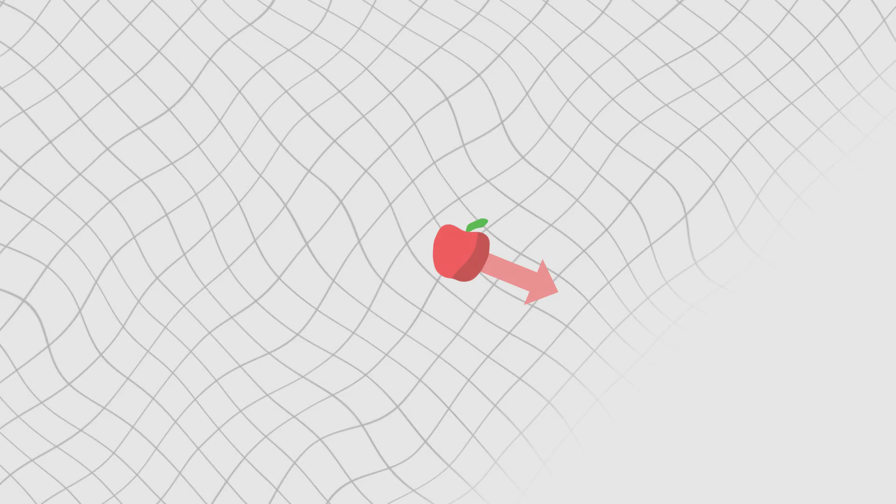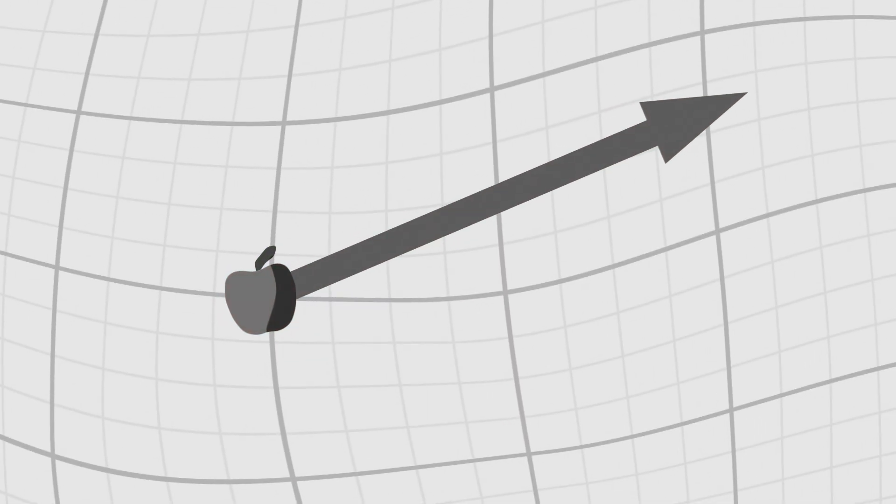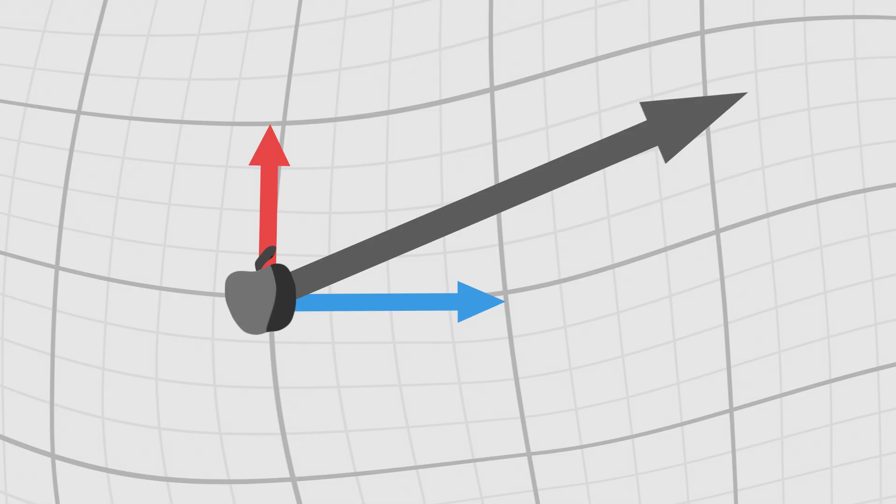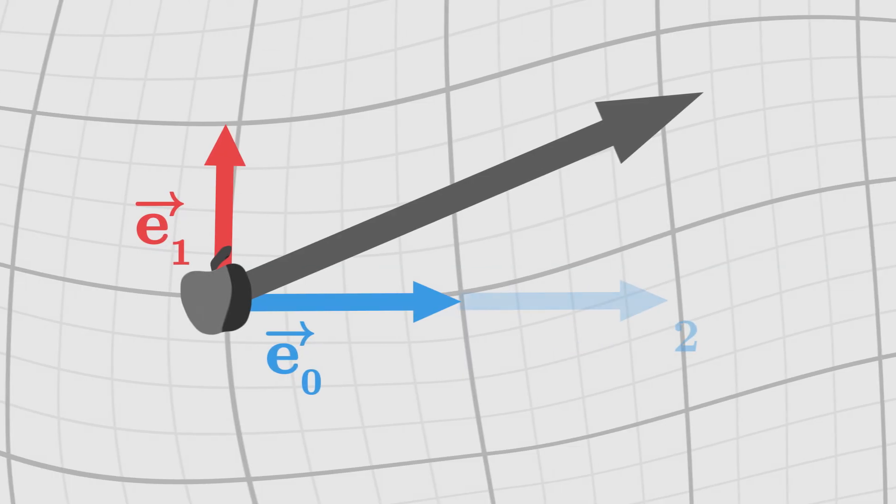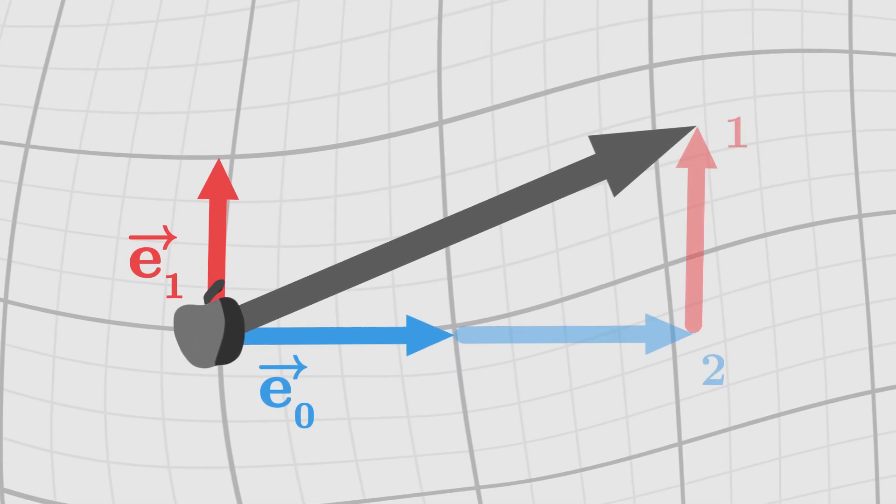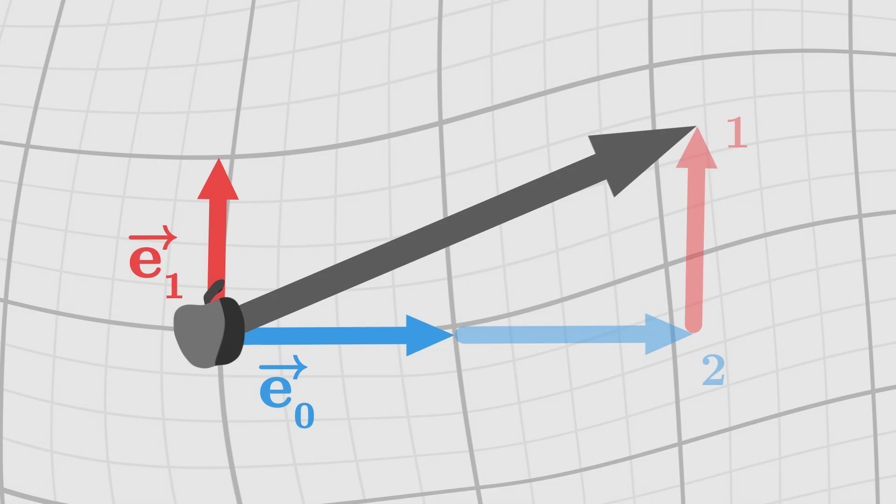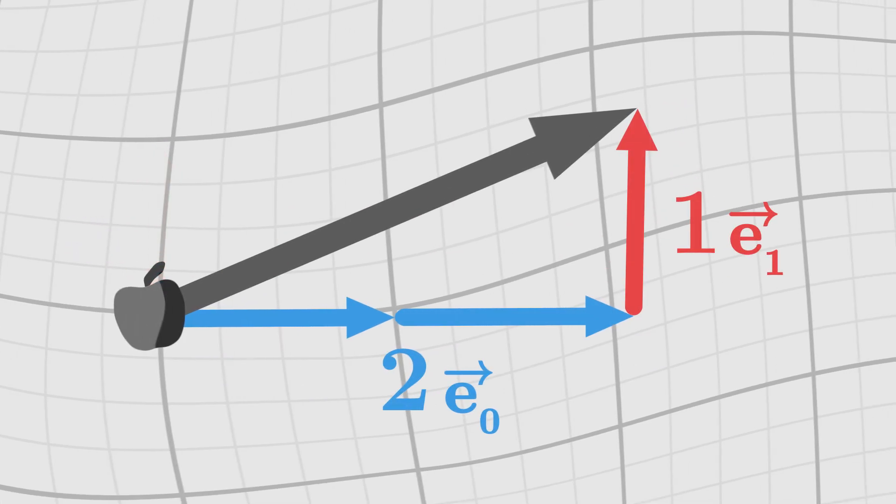We now want to describe velocity using our coordinates. Starting from the apple, we draw two arrows on the grid that represent the directions and amplitudes of each coordinate. These arrows are called basis vectors. We will denote them E0 and E1 given the coordinates they respectively describe. With these two basis vectors, we can decompose the velocity as a sum. Here, for example, two blue arrows and one red arrow. The numbers 2 and 1 are called the components of the vector.